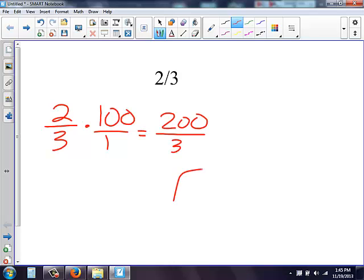Now I need to simplify this. So I need to figure out how many times does 3 go into 200. So 3 goes into 20, let's see, 6 times. 6 times 3 is 18.